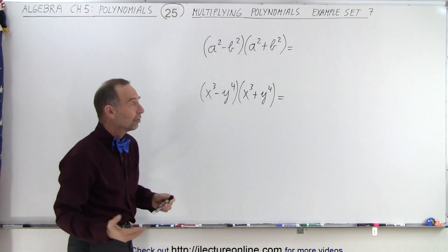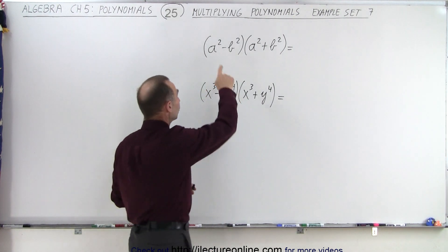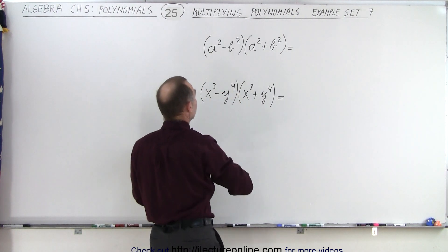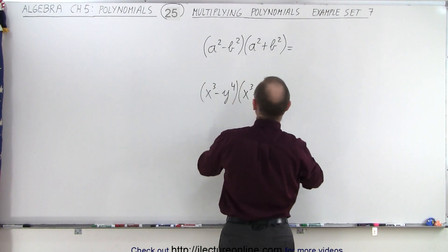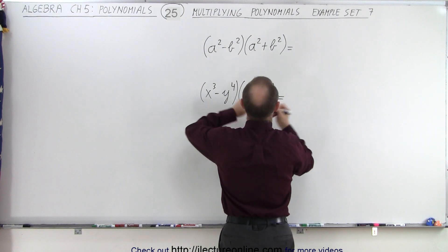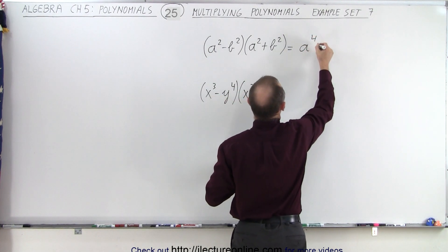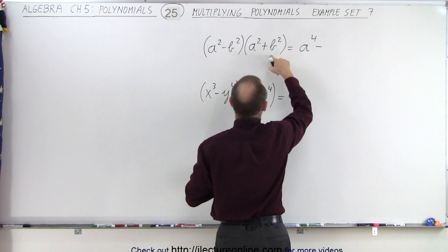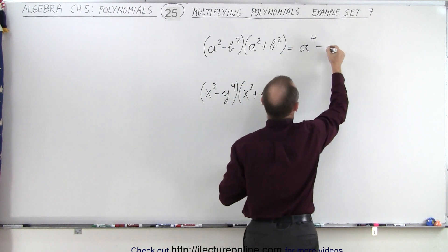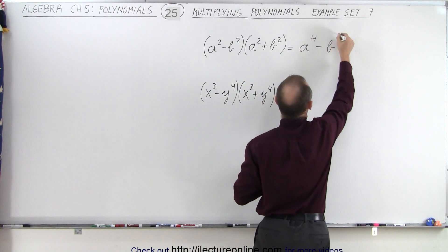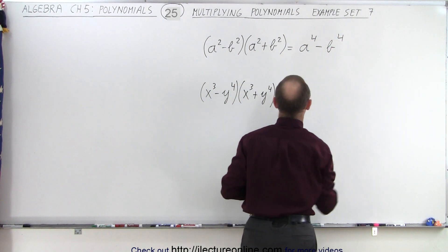So the rule is that we take the first term and we square it. So a squared, squared would be a to the fourth, because we multiply exponents, minus the last term squared, which would be b to the fourth.